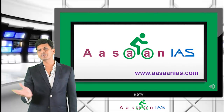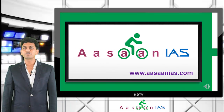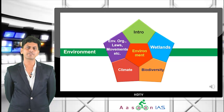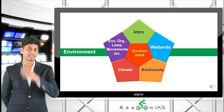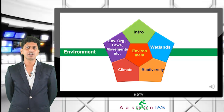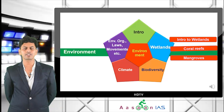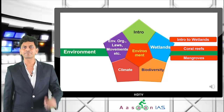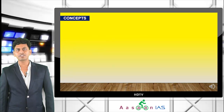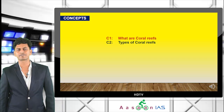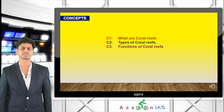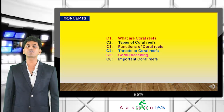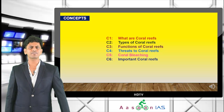Welcome to Asana IAS. The environment section is divided into five parts: introduction, wetlands, biodiversity, climate, environmental organizations, laws, and movements. We have already seen introduction to wetlands. Now we will see coral reefs. This video covers six concepts: what are coral reefs, types, benefits, threats, coral bleaching, and important coral reefs especially in India.